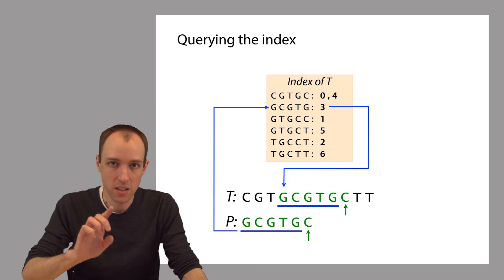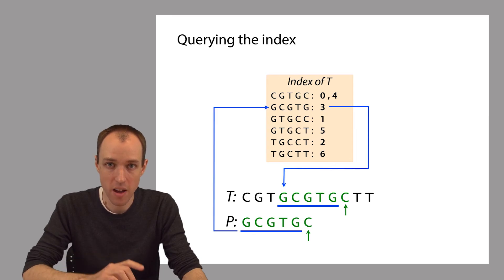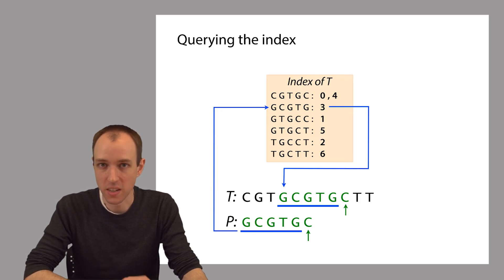Finding the index hits, the place where the 5-mer occurs within the text, that's the first step. But then this additional work that we have to do to determine if we have a full match of P to T, that's called verification. In this case, the verification succeeds because this C here matches this C here. So overall we can conclude that P occurs within T at offset 3.